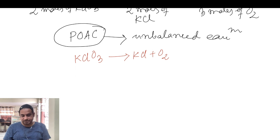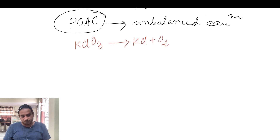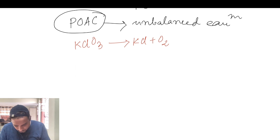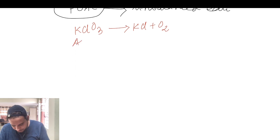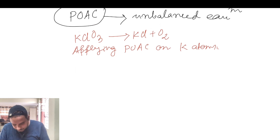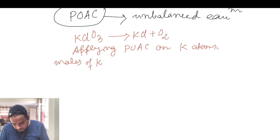KClO3 gives KCl plus O2 — this is the unbalanced equation. Then we apply PoSC. PoSC means the same element must be conserved as a component. In KClO3 we have K, Cl, and O. We start with K, and apply PoSC on potassium atoms. The left-hand side is the K source from KClO3, so moles of K in KClO3 equals moles of K on the right-hand side.